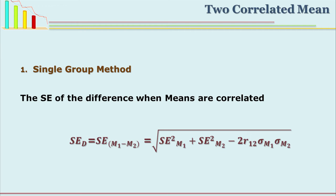Now how to find out the SE of difference between these two means? There is a formula: SE of difference between mean 1 and mean 2 equals the square root of (SE squared of mean 1 plus SE squared of mean 2 minus 2 times R of 1 and 2). R means the coefficient of correlation between two means, multiplied by the standard error of mean 1 and standard error of mean 2. We use this formula because these two means are correlated, so we find out the correlation between them.